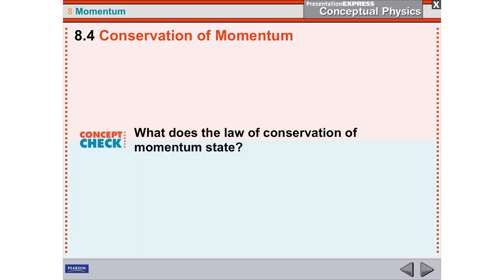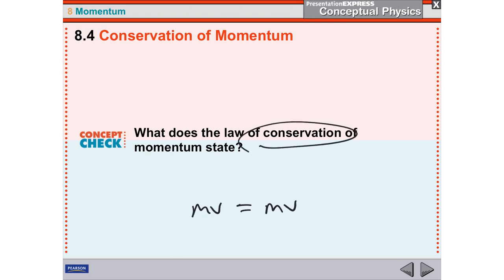So what does the law of conservation of momentum state? The momentum, or the mass times velocity of a system, is the same before an impact and after an impact. That's what conservation means — it's conserved, or it stays the same.